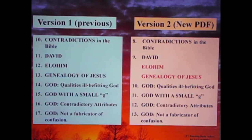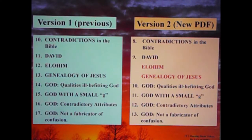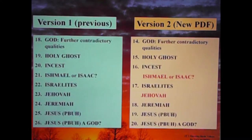Contradictions in the Bible is in both. David is in both. Elohim is not in the new PDF, neither is the genealogy of Jesus. Then we have God — qualities ill-befitting God, God with a small g, God contradictory attributes, and God not a fabricator of confusion. Then God further contradictory qualities, the Holy Ghost, incest. And the new PDF does not cover Ishmael or Isaac.